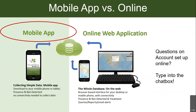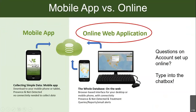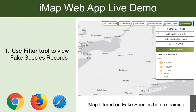That covers everything with the mobile app. If you were able to submit a fake species record, you're all set — you don't need to do anything more with IMAP. But if you're interested in what happened to your record, what else is in the database, then go back into the online web application. Let me briefly show you some of the IMAP website features as well.